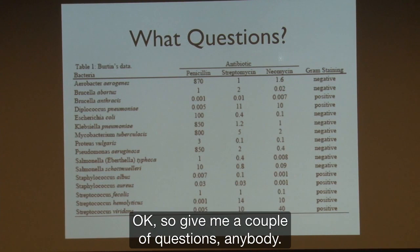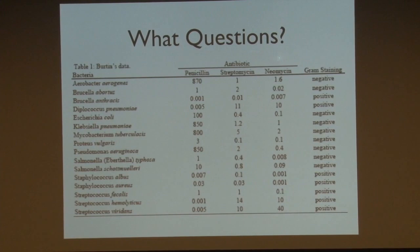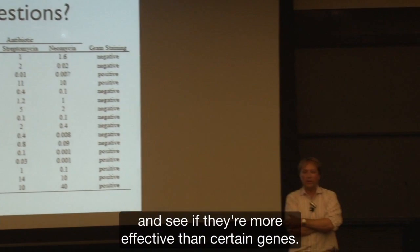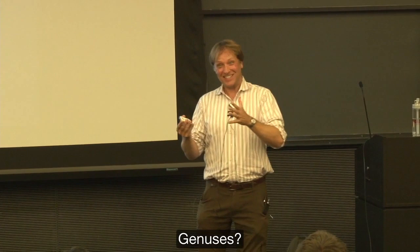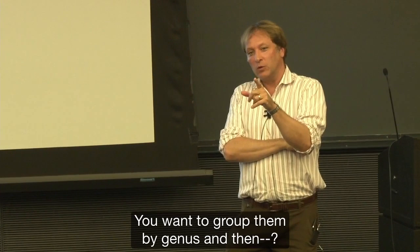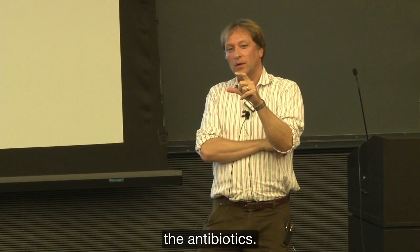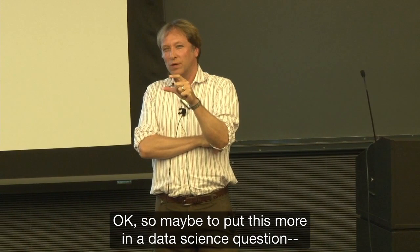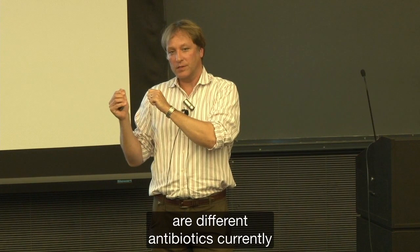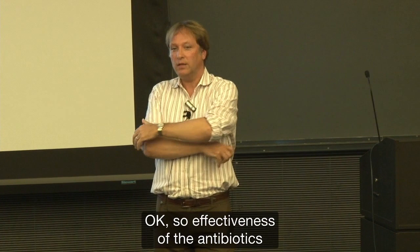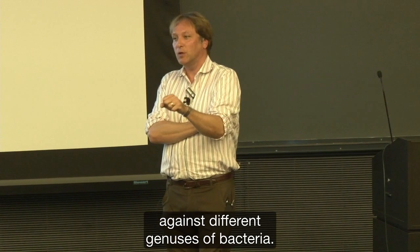Okay, give me a couple of questions. Anyone? — 'Can you divide antibiotics by genus and see if they're more effective in certain genera?' So maybe the data science question is: how effective are different antibiotics against different genera of bacteria? Another question: — 'The toxicity of the antibiotic — how harmful it is to your body.' The assumption is that lower concentrations of antibiotics would be safer. Another: given safe levels of the antibiotics, which ones can kill which bacteria? Or, which antibiotic is most effective against as many bacteria as possible?